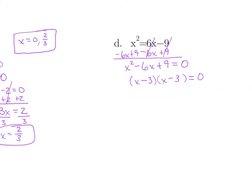Since our factors are exactly the same, we only have to work with one of them — no need to solve the same equation twice. So x minus 3 equals 0; add 3 to both sides and we get x equals 3. This one only has one solution.